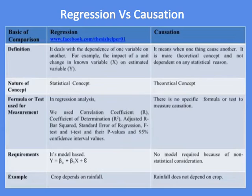In regression analysis, we use the correlation coefficient r, coefficient of determination r-squared, adjusted r-bar-squared, standard error of regression, F-test, T-tests, their p-values, and 95% confidence interval values. While there is no specific formula or test to measure causation.